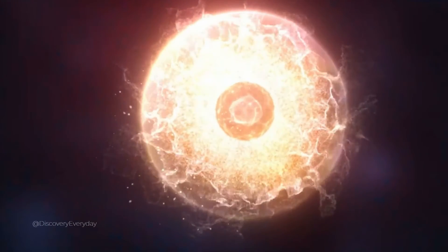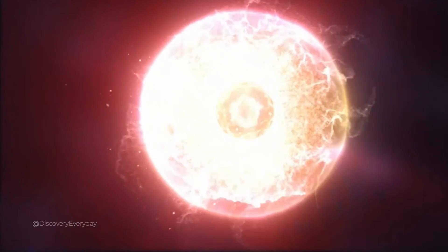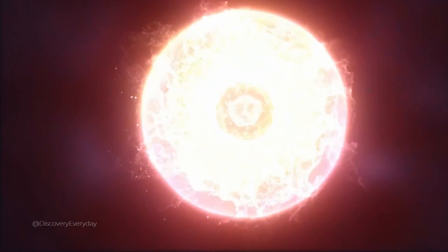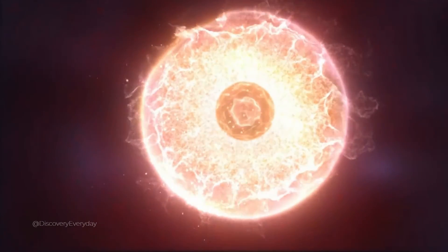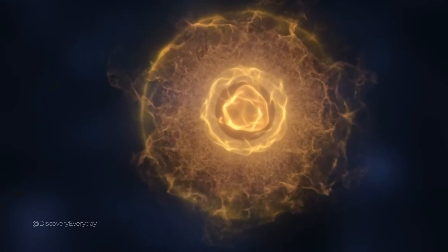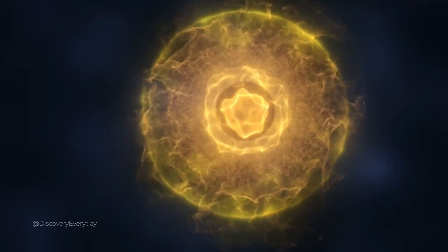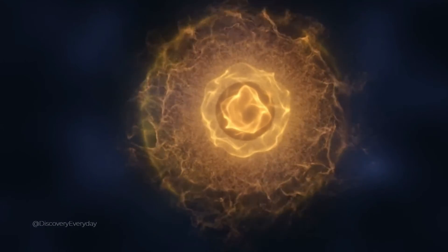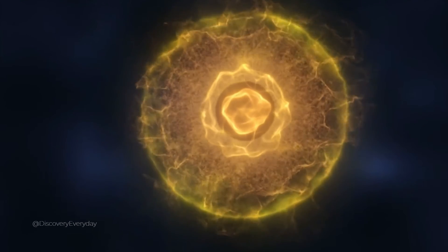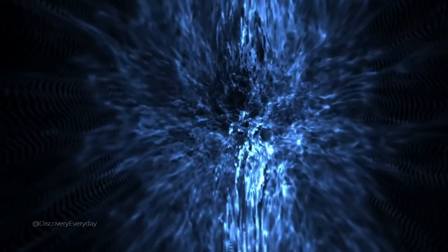Number 1: The Axion. Axions are the Houdinis of the particle world. In 1977, physicists noticed an oddity. Certain interactions between particles should have violated CP symmetry, the idea that the laws of physics remain unchanged when a particle is swapped with its antiparticle and inverted. But, surprisingly, they didn't. The hypothetical Axion emerged as the solution to this conundrum.